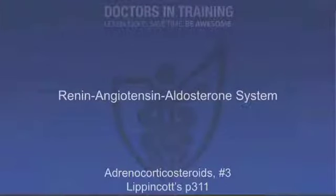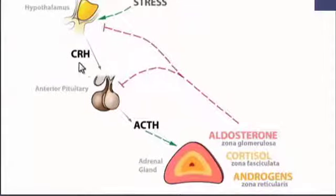Production of mineralocorticoids is regulated by the renin-angiotensin-aldosterone system. Production of glucocorticoids is more involved: the hypothalamus produces corticotropin-releasing hormone (CRH), which affects the anterior pituitary, which produces ACTH — adrenocorticotropic hormone, also called corticotropin. Releasing hormones almost always come from the hypothalamus, and ACTH comes from the anterior pituitary. Production of androgens is also regulated by ACTH and therefore CRH. The catecholamines produced in the medulla are regulated by pre-ganglionic sympathetic fibers.